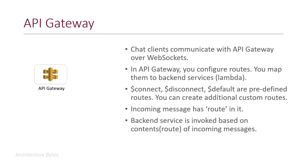The API Gateway: chat clients communicate with the API Gateway over WebSockets. In the API Gateway, you configure routes — essentially you map the routes to backend services, Lambda in our case. Connect, disconnect, and default are some predefined routes, and you can create additional custom routes. Incoming messages have route information in them, and backend services are invoked based on the route.